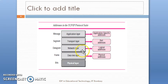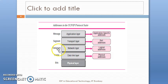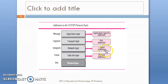Now let's understand what addresses are associated with each layer. The data link layer deals with frames. The network layer deals with datagrams, also called packets. The transport layer deals with segments, and the application layer deals with messages. The physical address is associated with the data link layer, the logical address with the network layer, and the port address with the transport layer.